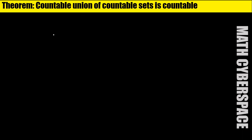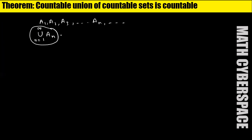So we have some countable sets — say A1, A2, A3, An and so on. They are countable, not necessarily finite; these sets may be infinite. We take the union of these sets: the union from n equals one to infinity of An. And we have to prove that this union will be countable.